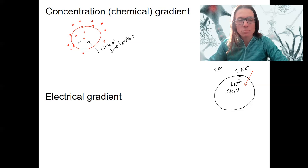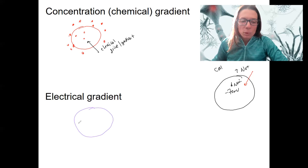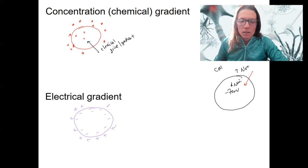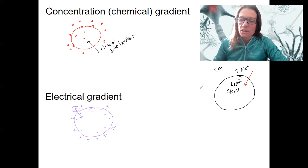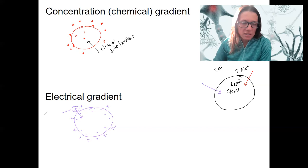The concentration piece of that is when there's more of something — anything — on one side versus the other. The electrical component is when there is a difference in charge. If we have more negative inside the cell, which we do in reality, and more positive outside the cell, there's a drive for positive to move in. That is the electrical drive. In this scenario it's in — but it could potentially be out if we're talking about movement of a negative ion. This is the electrical drive for a positive ion, anything positive.